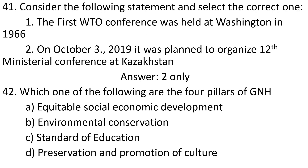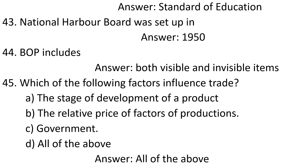Question 41: Consider the following statements and select the correct one. 1. The first WTO conference was held at Washington in 1966. 2. On October 3, 2019, it was planned to organize 12th ministerial conference at Kazakhstan. Answer: 2 only. Question 42: Which one of the following are the four pillars of GNH? A. Equitable social economic development. B. Environmental conservation. C. Standard of education. D. Preservation and promotion of culture. Answer: Standard of education. Question 43: National harbour board was set up in. Answer: 1950.